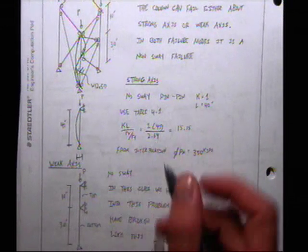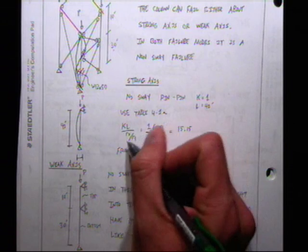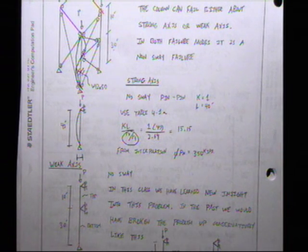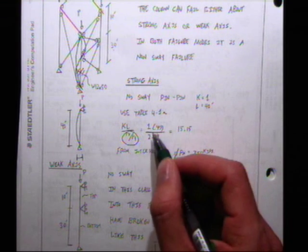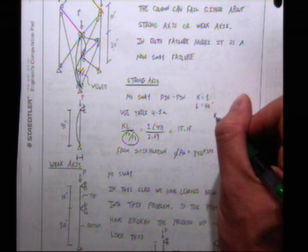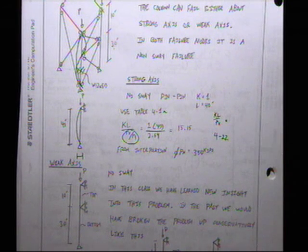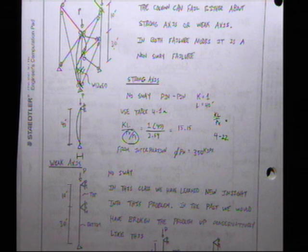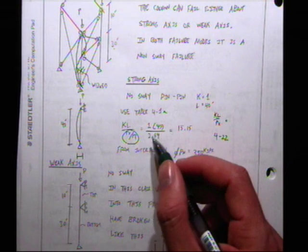Table 4-1 is derived for buckling about the weak axis. To use it for the strong axis, you divide by rx over ry. So you take KL divided by (rx over ry). If that seems odd, you can just compute KL over rx directly and use Table 4-22, which works with KL over rx or KL over r.